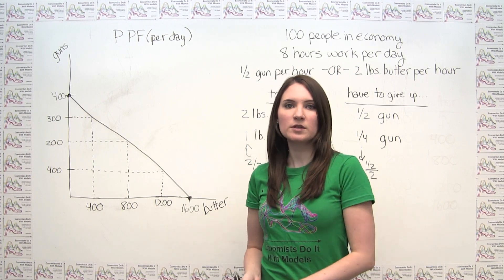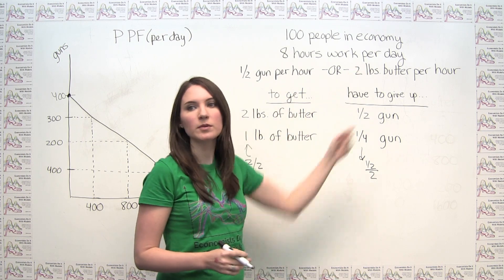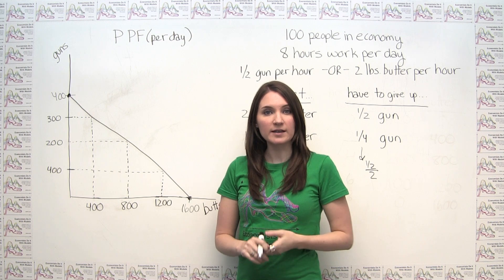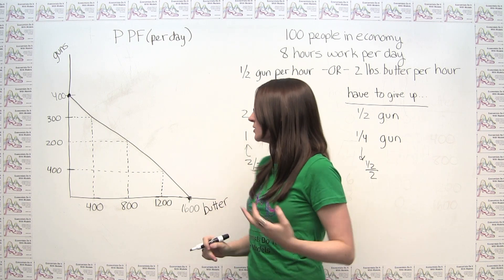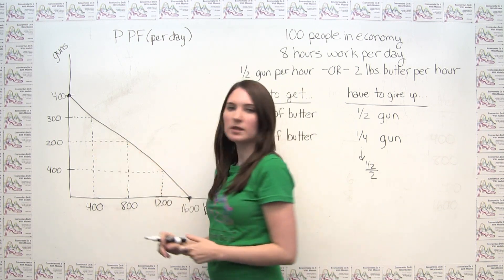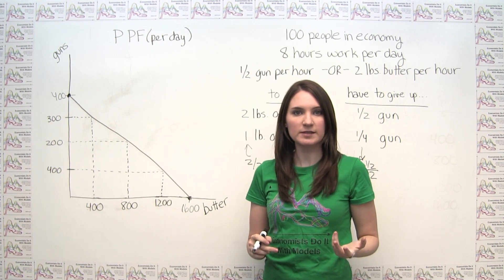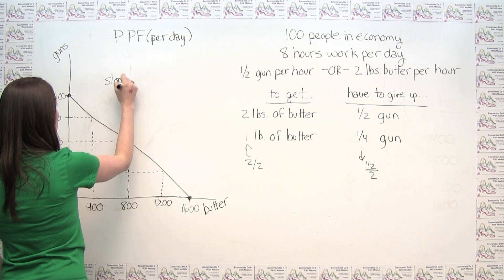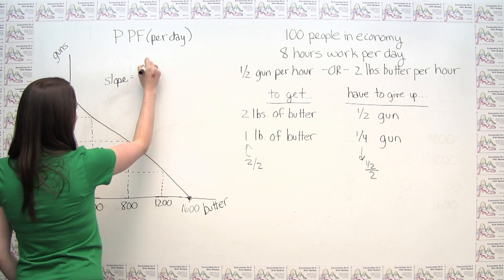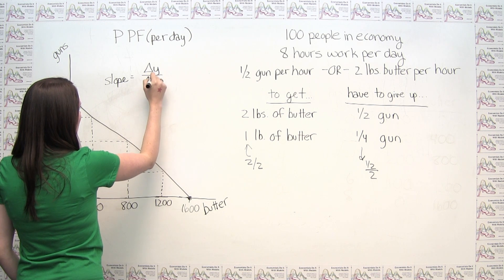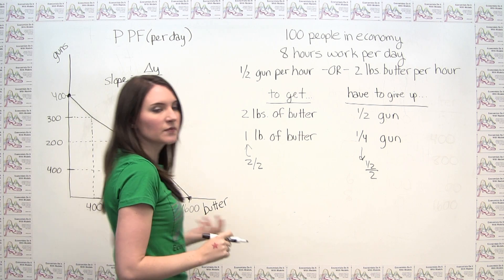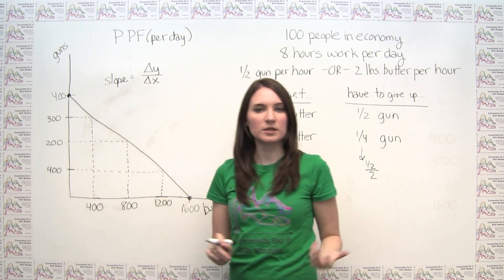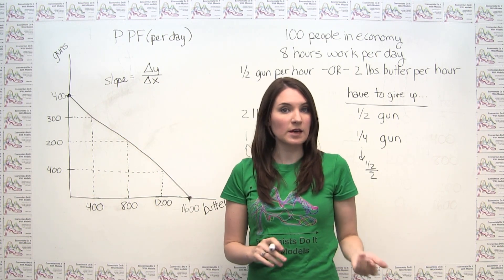The production possibilities frontier that corresponds to this setup is what we see here, and we discussed before that it was in fact a straight line. So it should be reasonably easy to calculate the slope of this production possibilities frontier, because the slope of a straight line is just rise over run, or alternatively change in y over change in x. We can then take 2 points on our production possibilities frontier and use them to calculate the slope.